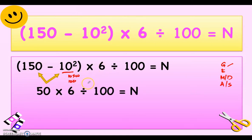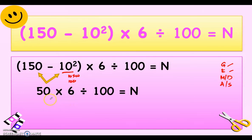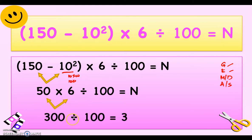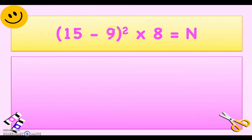We copy the rest of the numbers since we are not going to perform them yet. There are no more grouping symbols in this equation. There is no exponent next, so we skip and proceed to multiplication or division. Multiplication comes before division from left to right, so we multiply first: 50 times 6 is 300 divided by 100, which simplifies to 3.